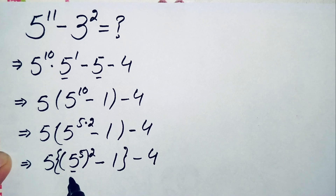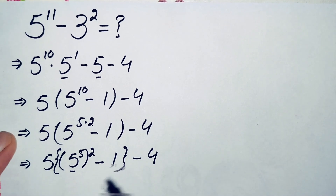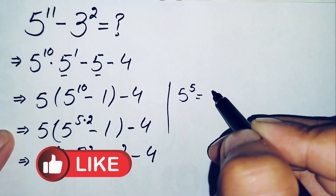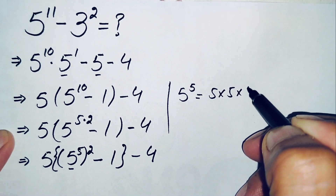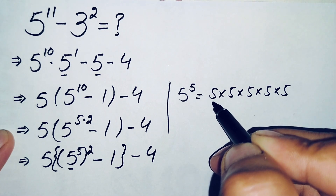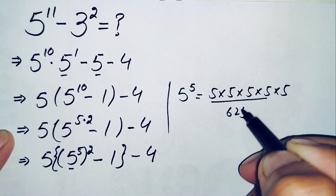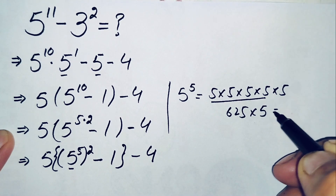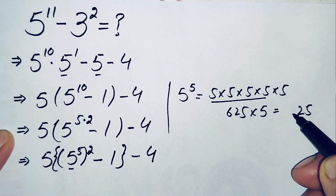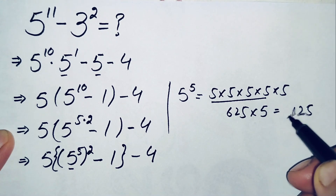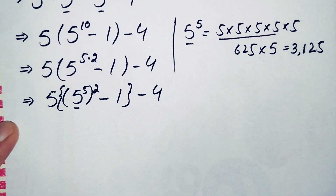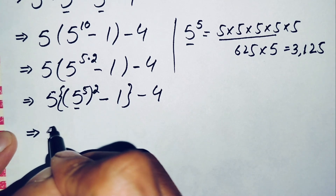Here we will find the value of 5 raised to power 5. 5 raised to power 5 means we multiply 5 five times: 5 times 5 is 25, 25 times 5 is 125, 125 times 5 is 625, and 625 times 5 is 3125. So the value of 5 raised to power 5 is 3125.